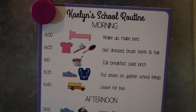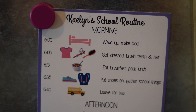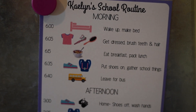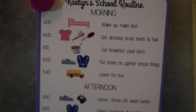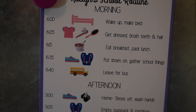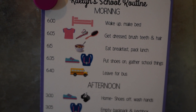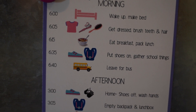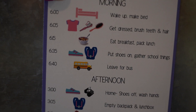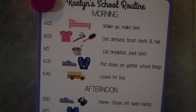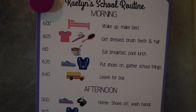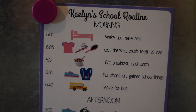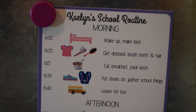Her morning routine: she wakes up at six o'clock and makes her bed. After that she gets dressed and brushes her teeth and hair. At 6:15 she has to be downstairs — that's when she'll eat breakfast and we'll pack her lunch while she's eating. At 6:35 she has to be putting her shoes on and getting her backpack, and at 6:40 they are out the door to catch the bus.